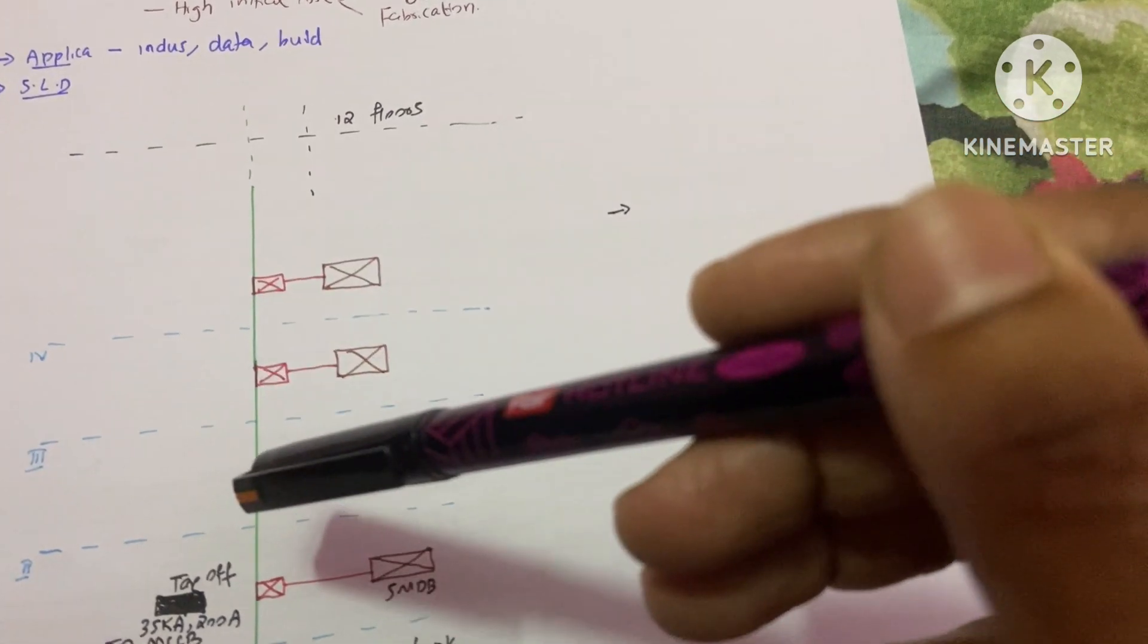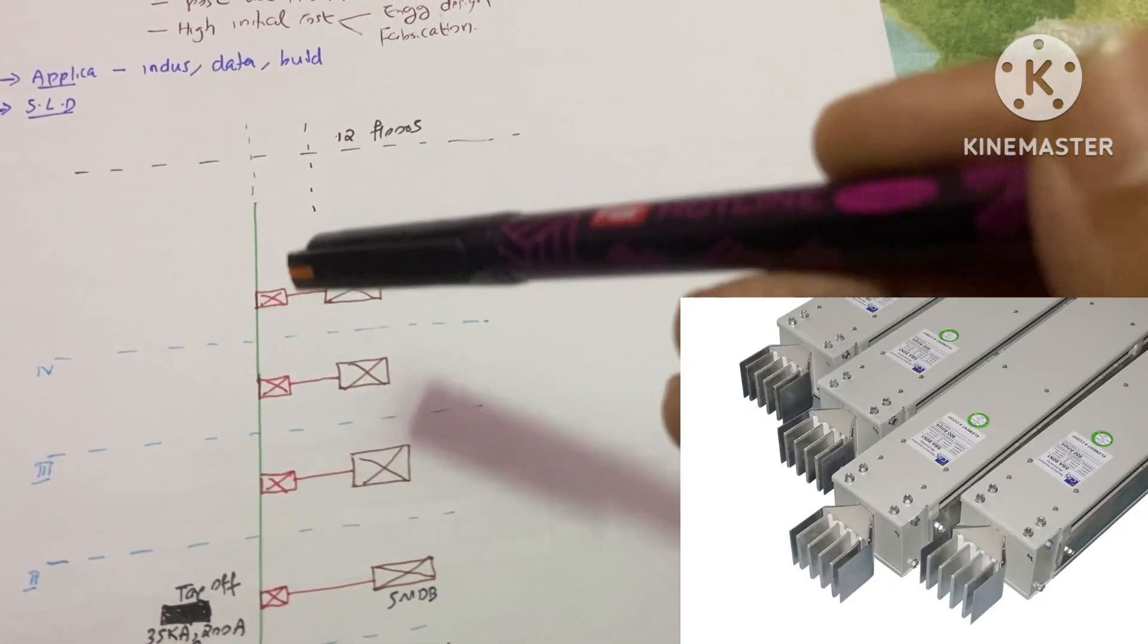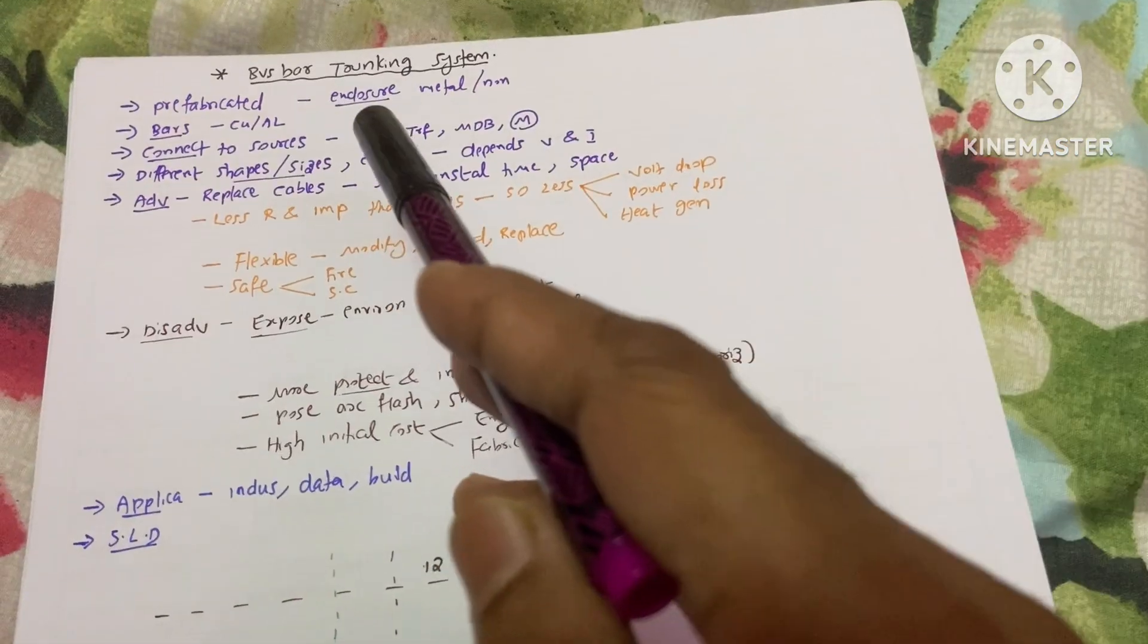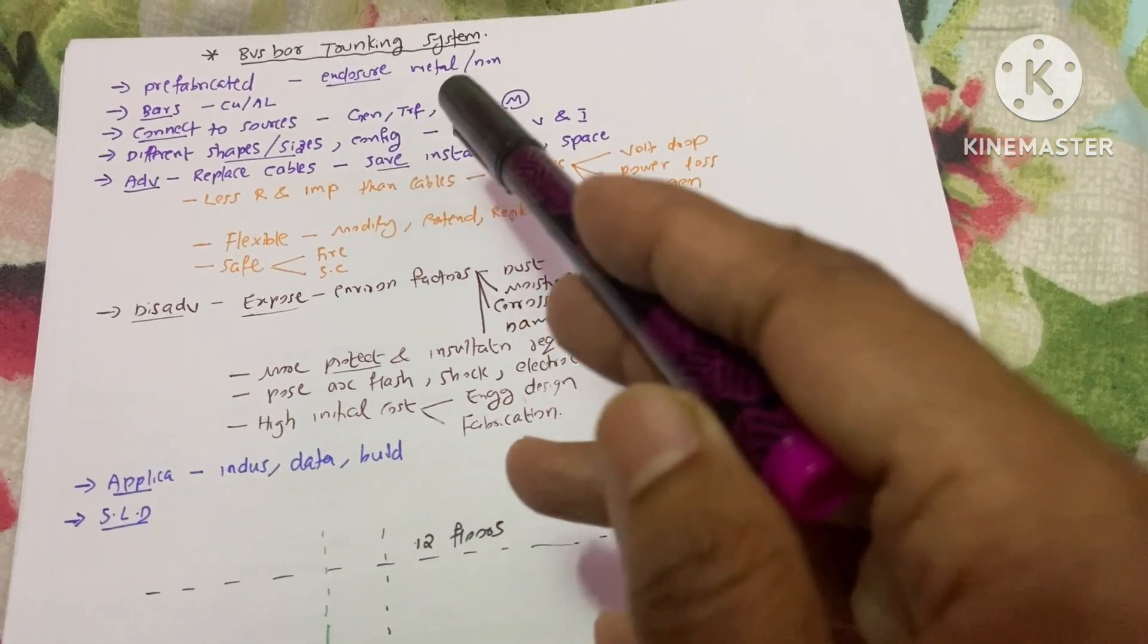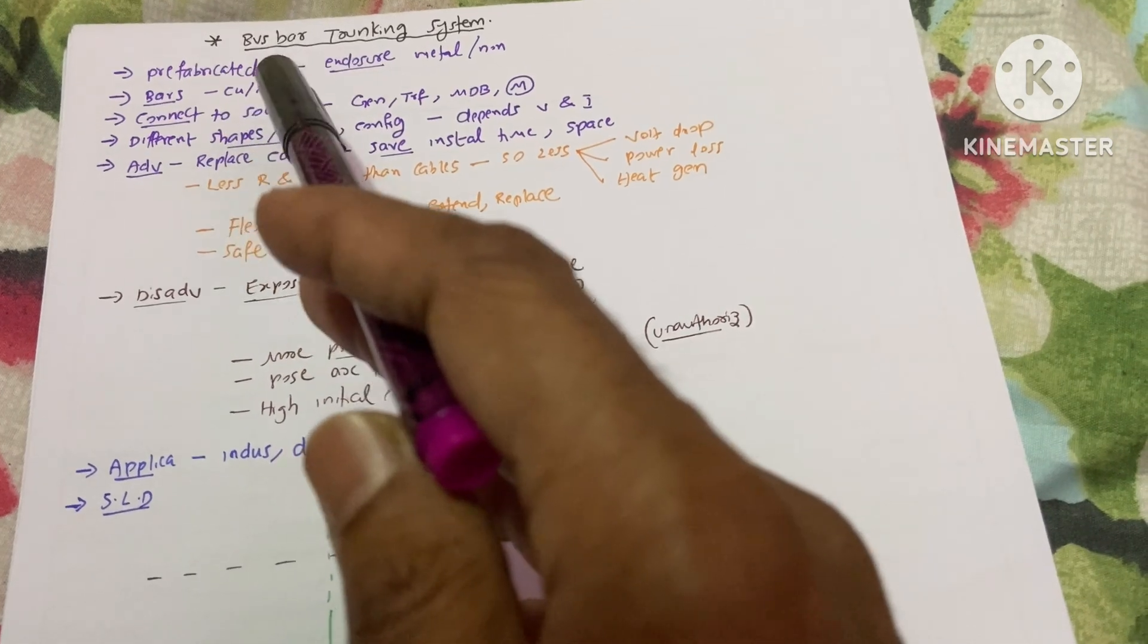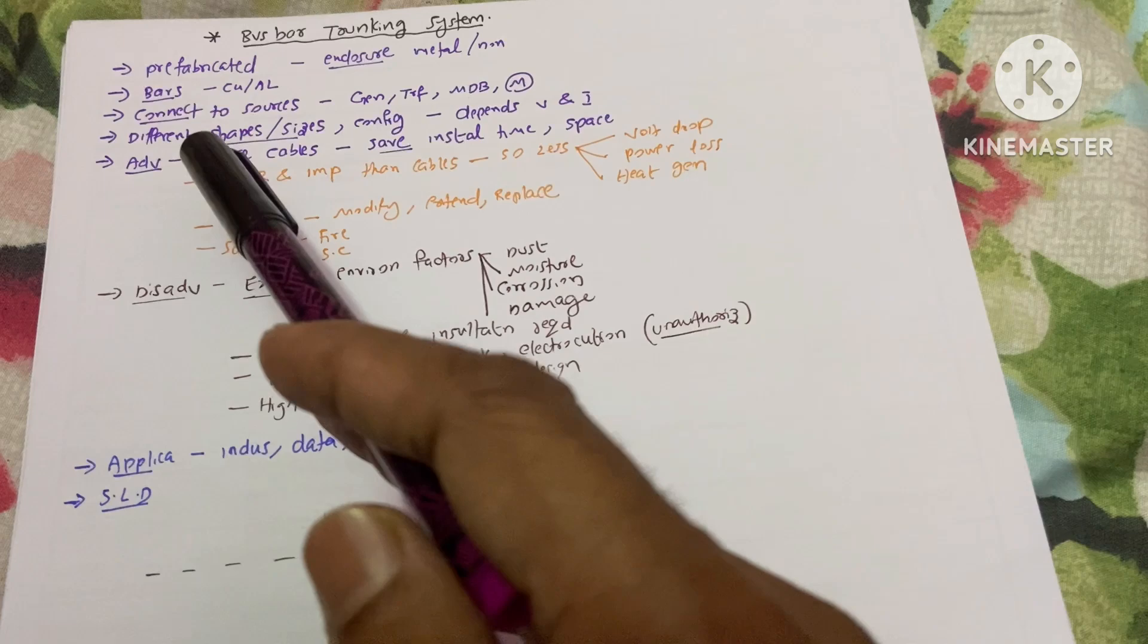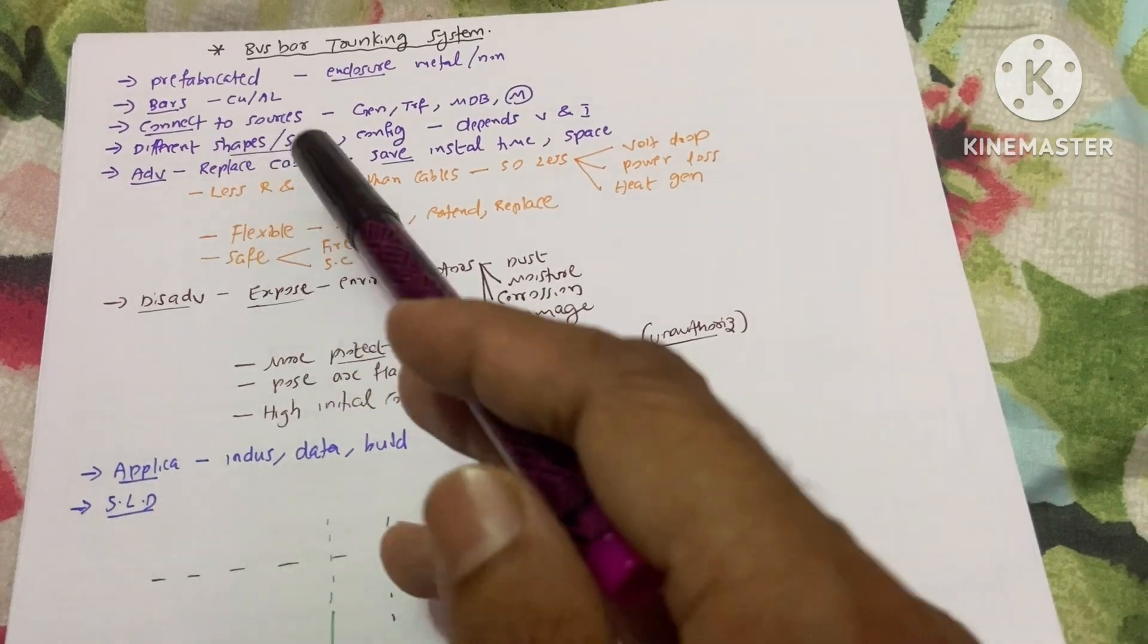This trunking contains three phases, a neutral, and also an earth bar. This enclosure can be metal or non-metallic. These bars would be of copper or aluminum material. We can connect this trunking system to different sources.